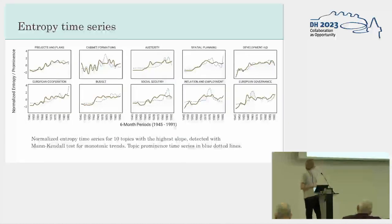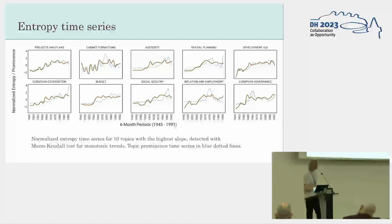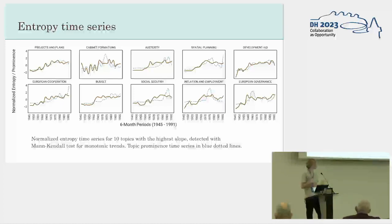If you look at the entropy trends — that's the brown line — and sort them by their slopes, you can see some economic topics increasing in entropy over time. You might ask: is this not just an effect of the overall frequency of the topic? That's the small dotted line. In the case of austerity, for example, you can see that before austerity becomes much talked about in the 1980s, there's already an increase in entropy.